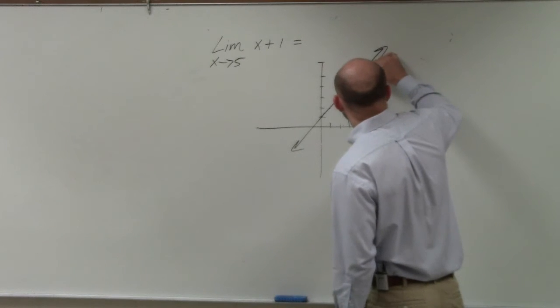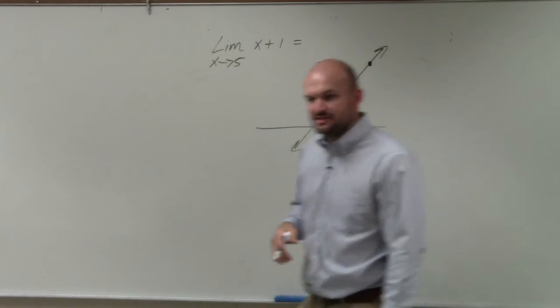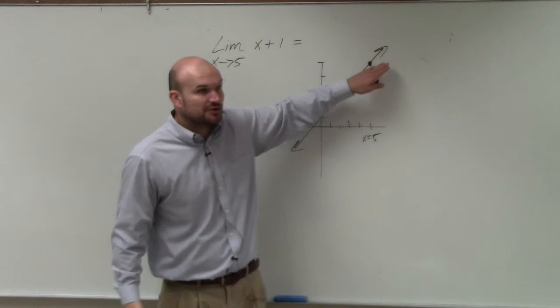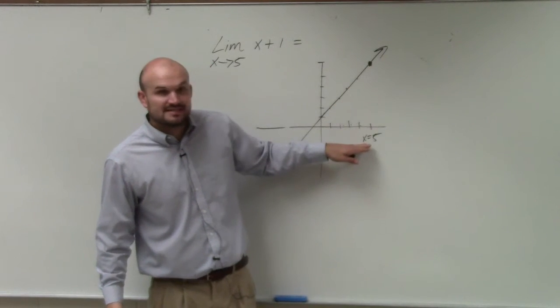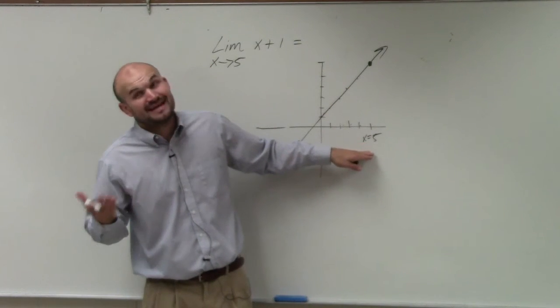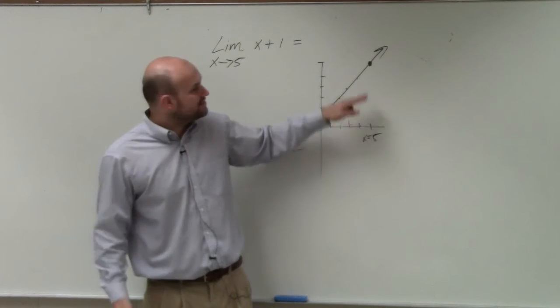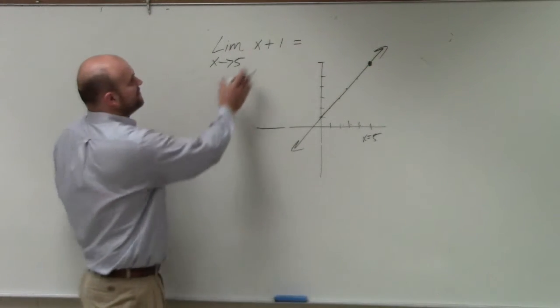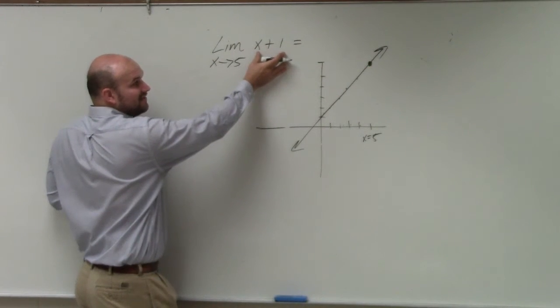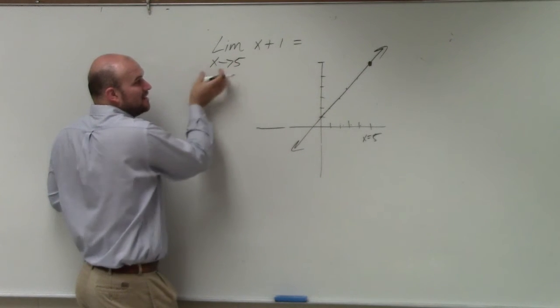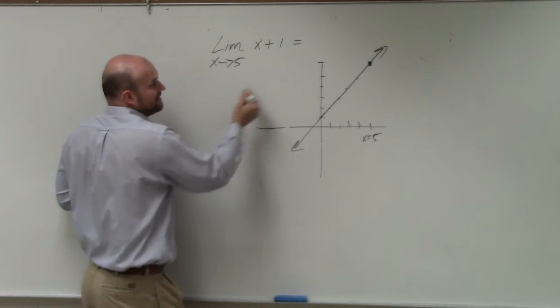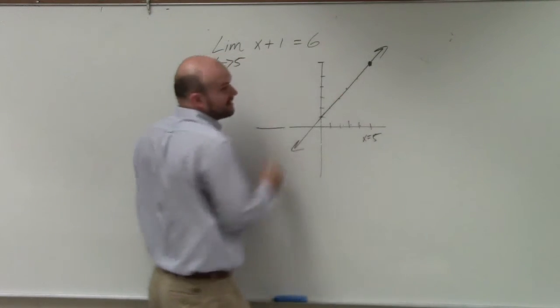Well, if we go up to this function, we know the function is continuous at that point, right? There is a value when x equals 5. So the value of the function when it's approaching x equals 5 is obviously going to be equal to 6.